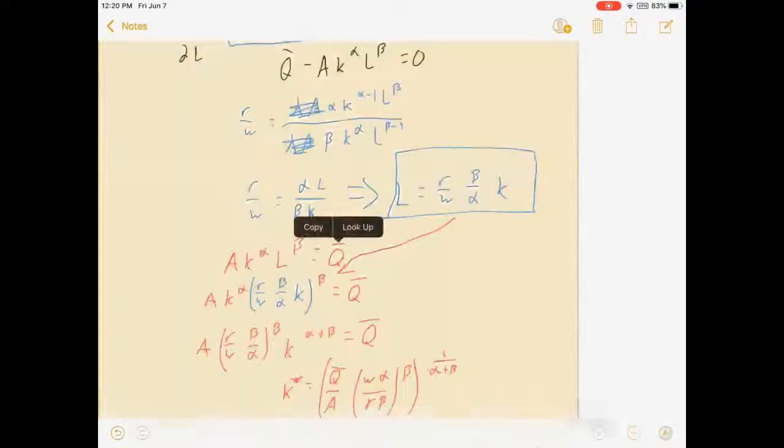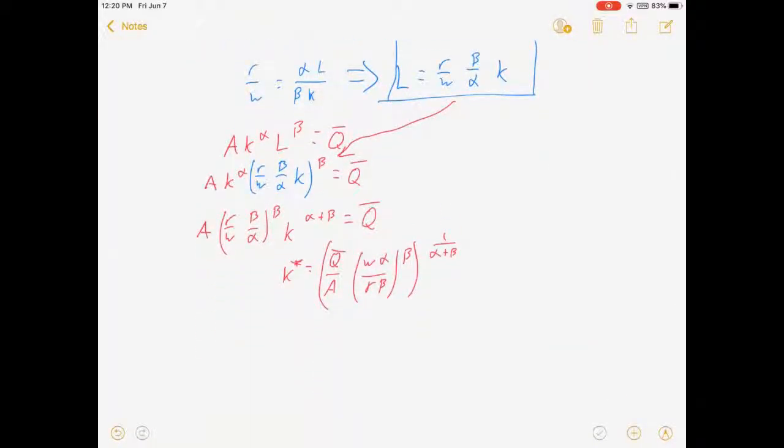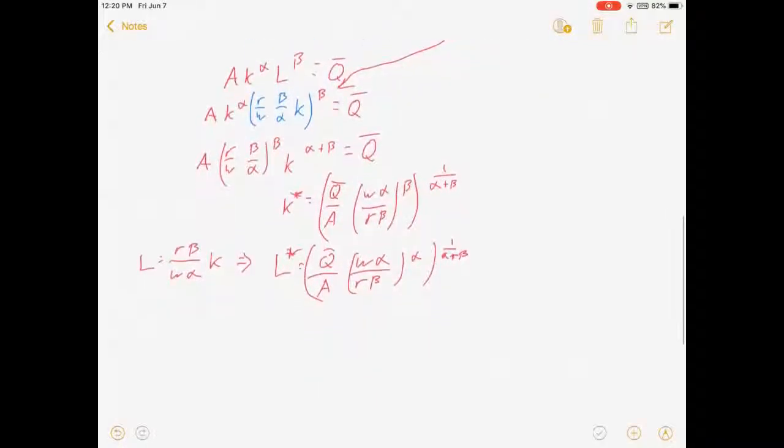Now I can substitute this into my optimal ratio. L equals R beta over W alpha times K, which in this case means L star is going to be equal to Q bar over A times W alpha over R beta to the alpha, all to the 1 over alpha plus beta. Obviously, I skipped a step or two there. If you're following this video, I'm sure you can figure that part out on your own. I didn't do any fancy tricks.